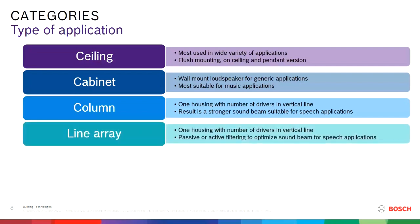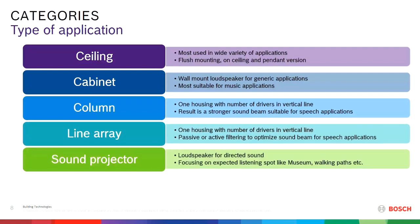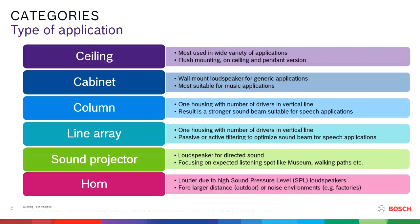A line array is similar to a column: one housing with a number of drivers in a vertical line. They can be passive or active, and have an optimized sound beam for speech applications due to the position of the speakers and filtering. Sound projectors are loudspeakers for direct sound — they focus on listening spots, like in museums or walking paths, projecting sound to a certain area. Horns can produce a high sound pressure level, so they sound really loud, making them suitable for larger distances, outdoors, or in noisy environments like factories.